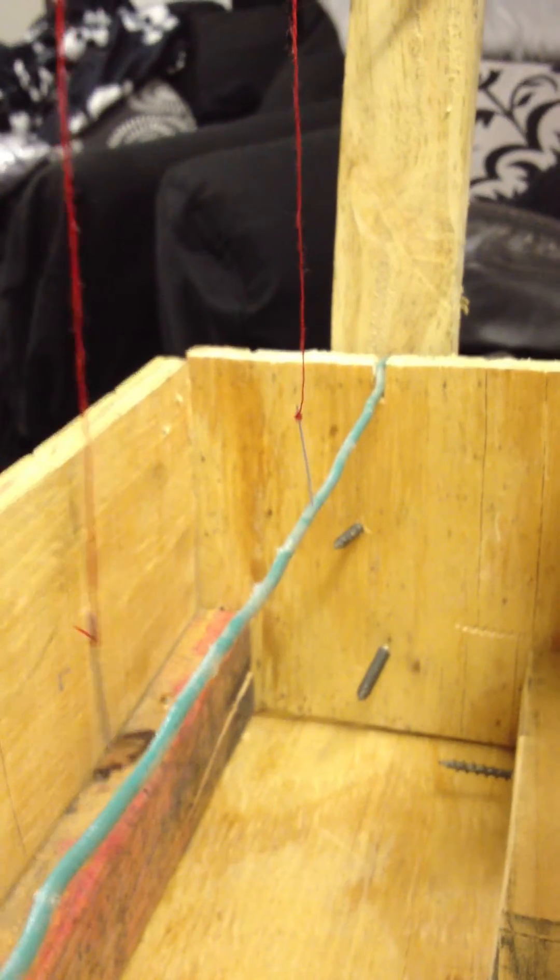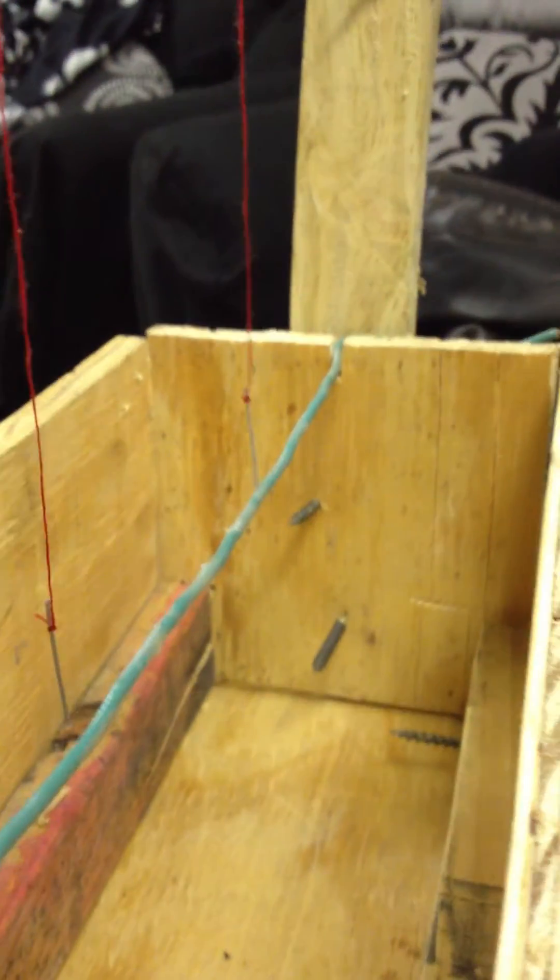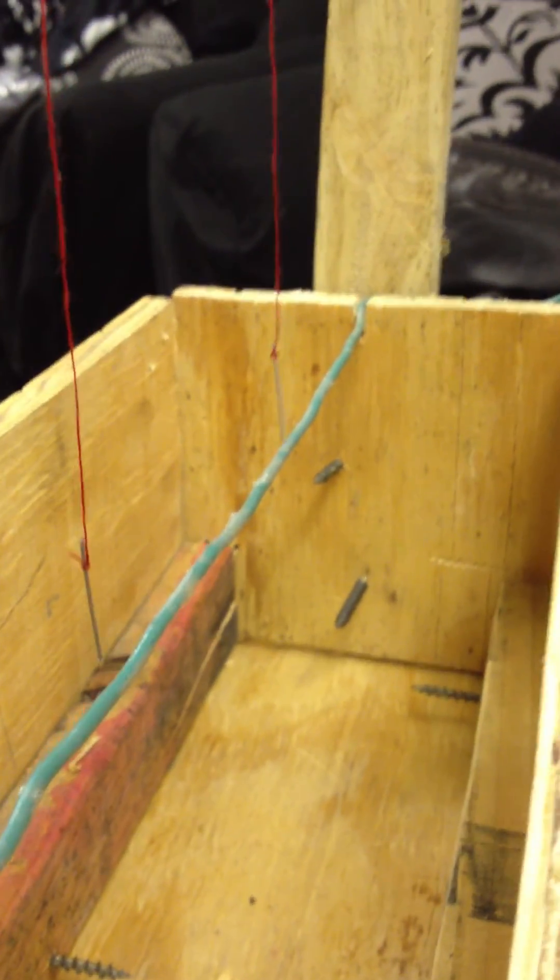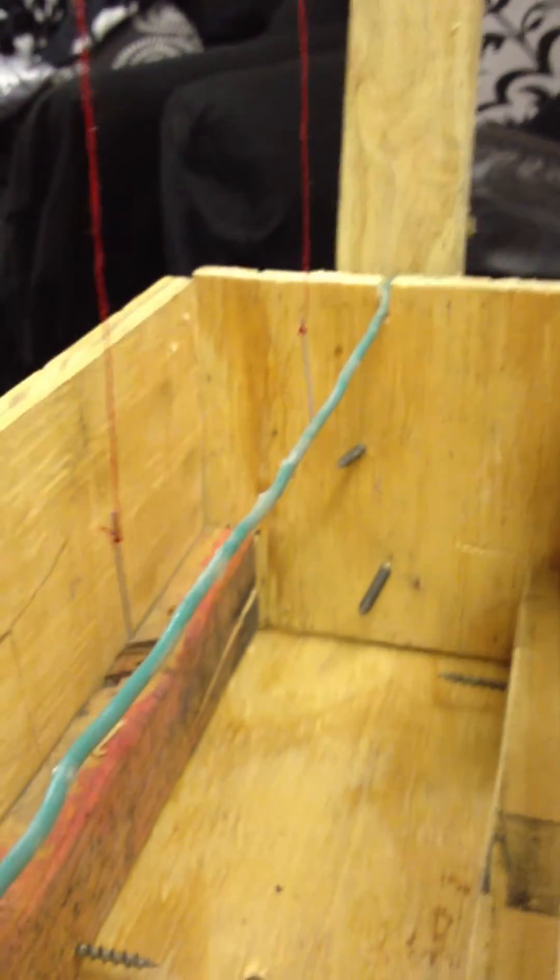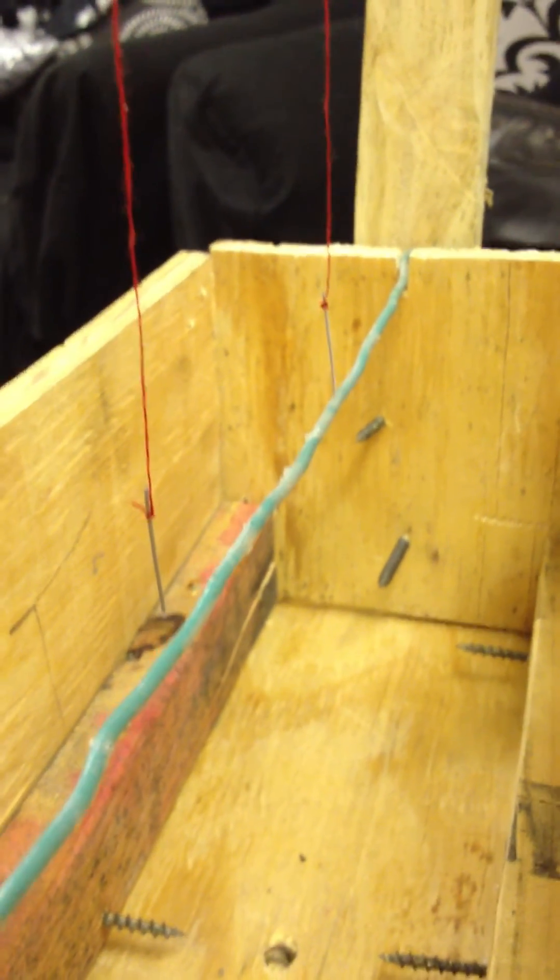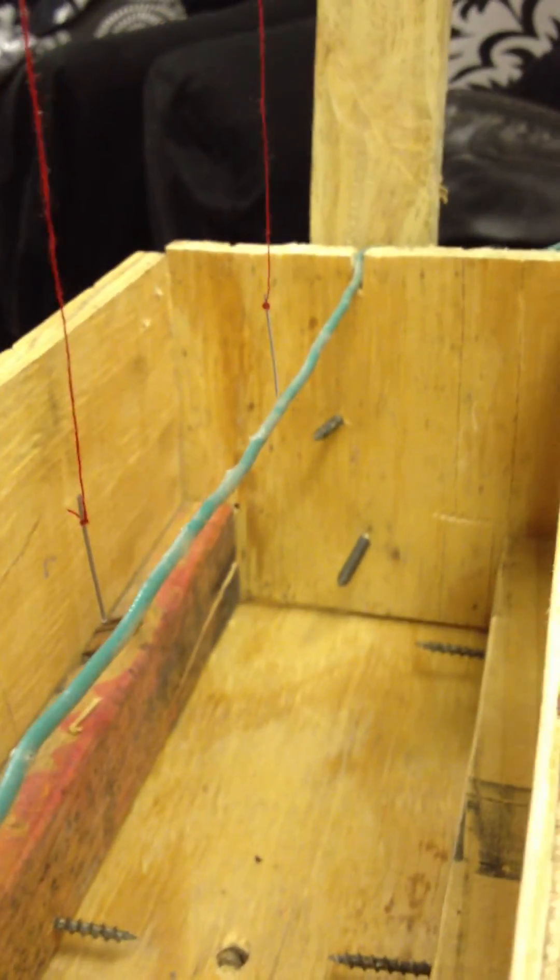So as you can see, since it's repelling off the wire from both magnets, you can see that the wire has a north and a south pole.